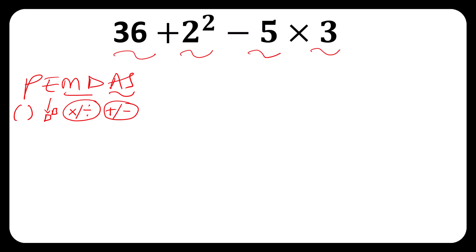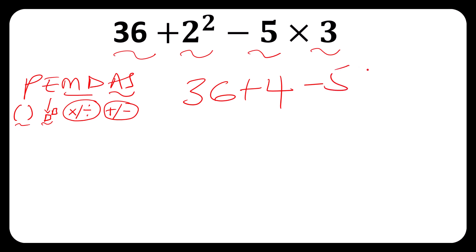Now let's solve. Do we have any brackets? No. Do we have any exponents? Yes — we have 2 squared here. So that becomes 36 plus 4 minus 5 times 3.